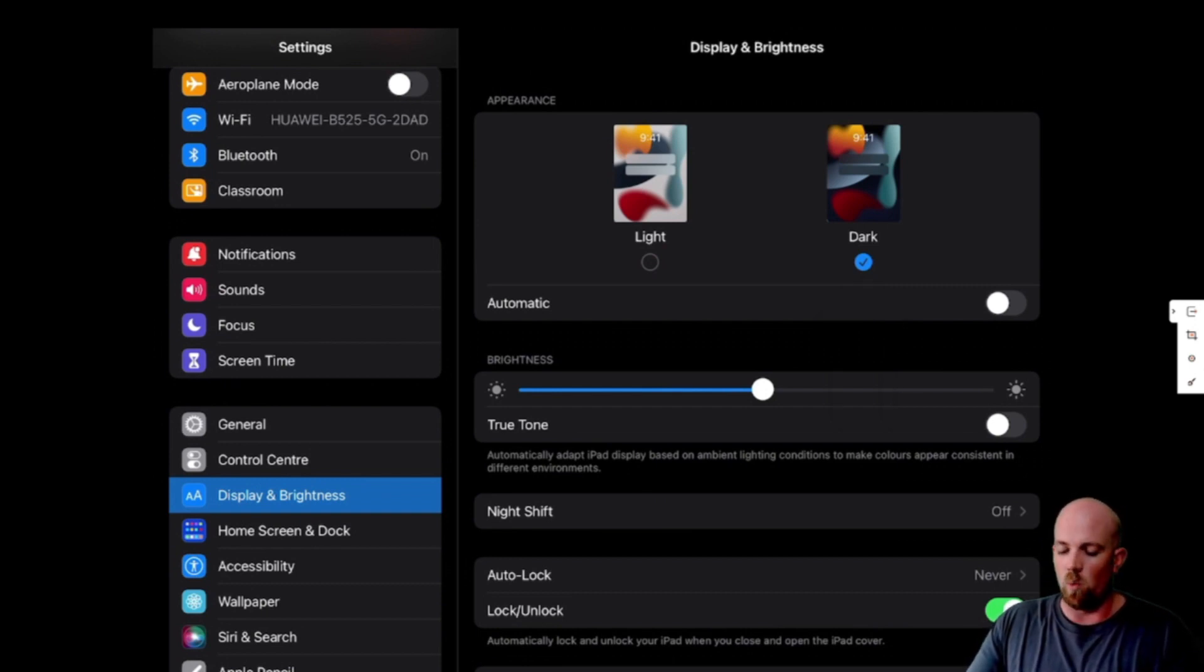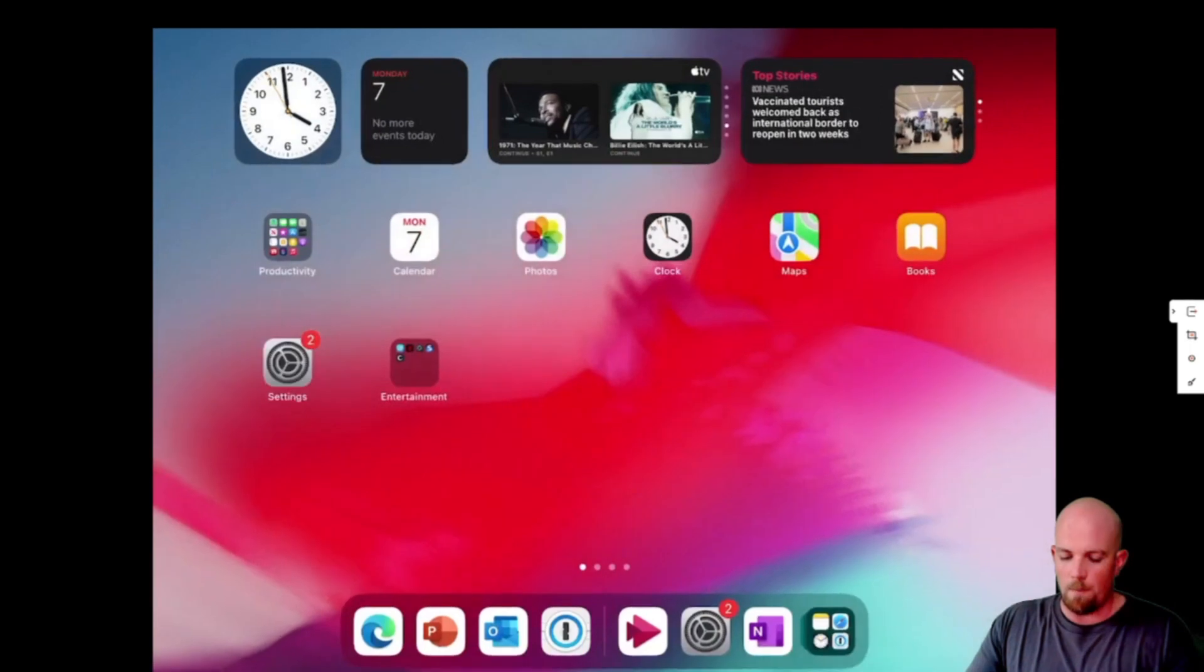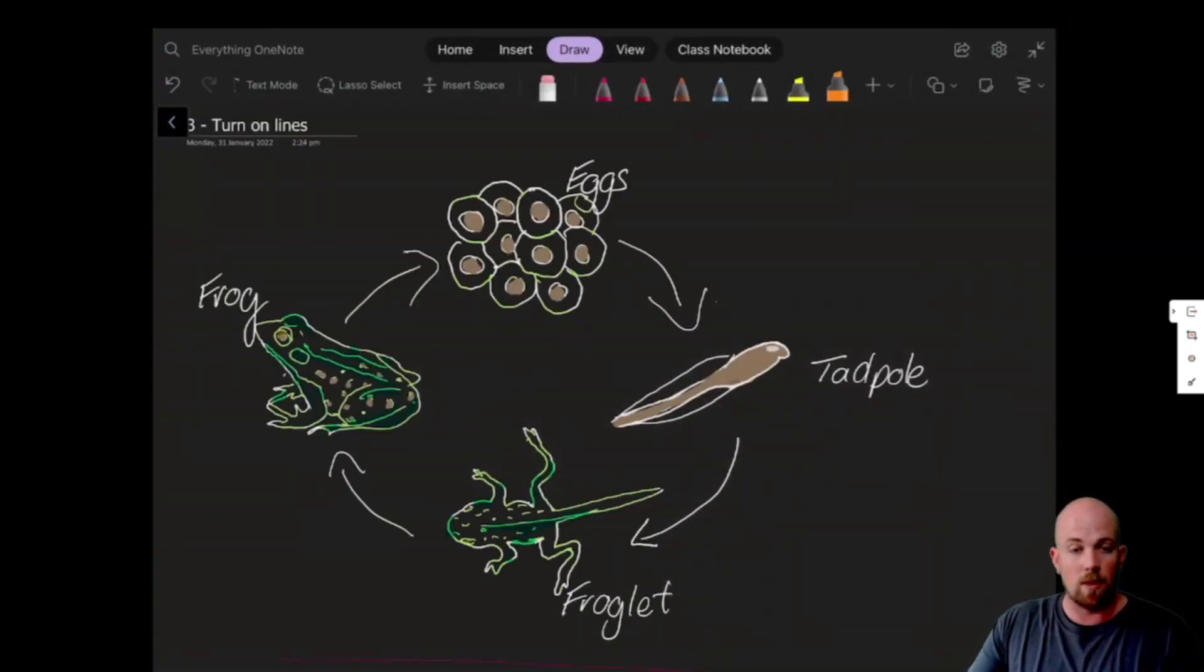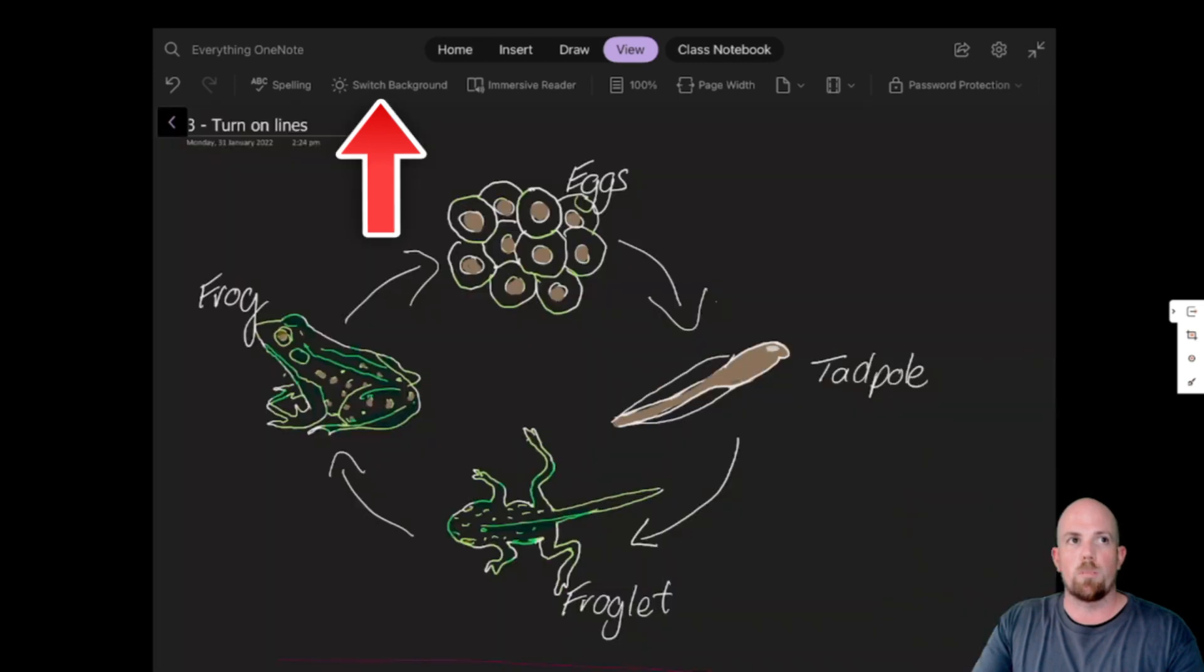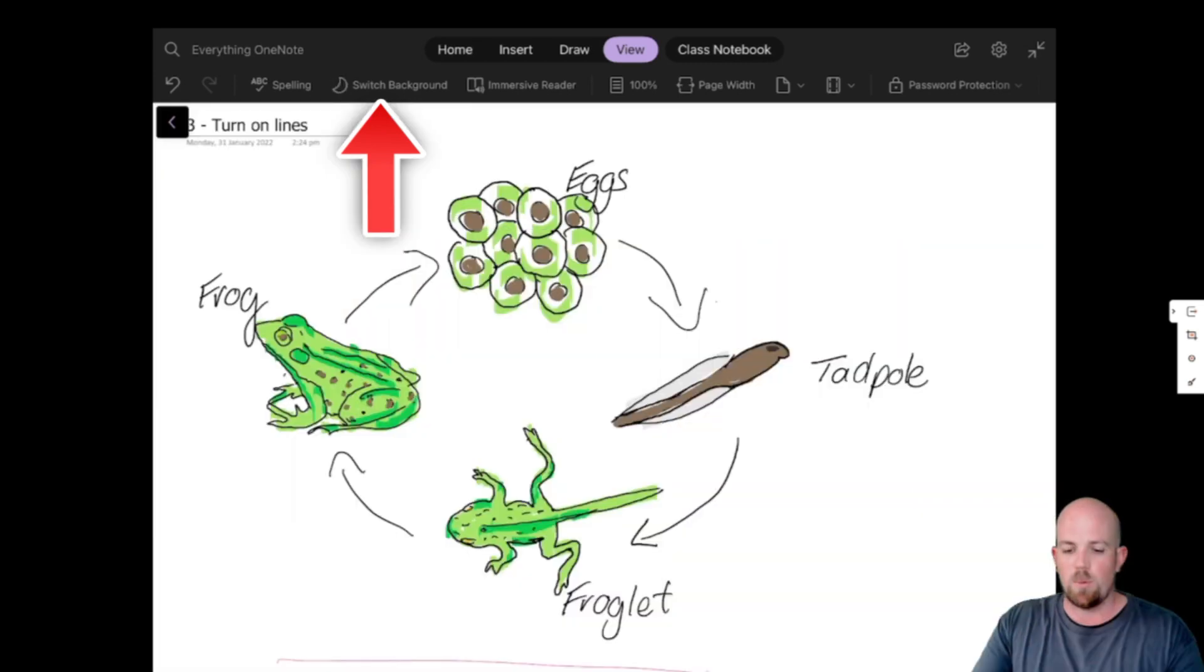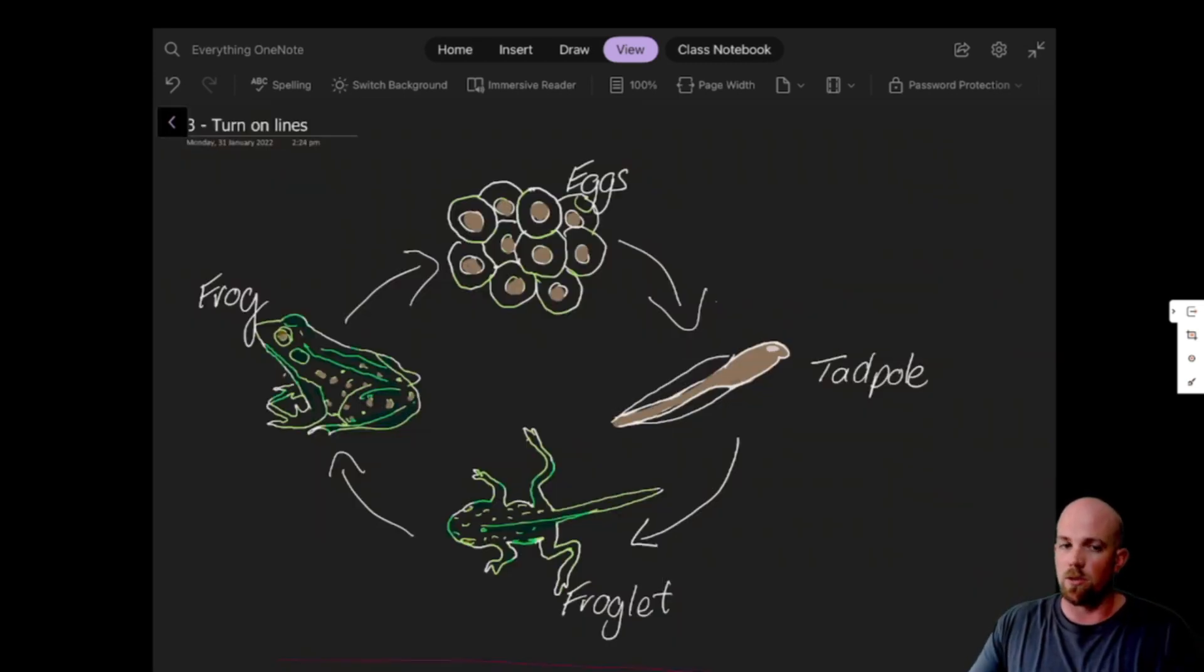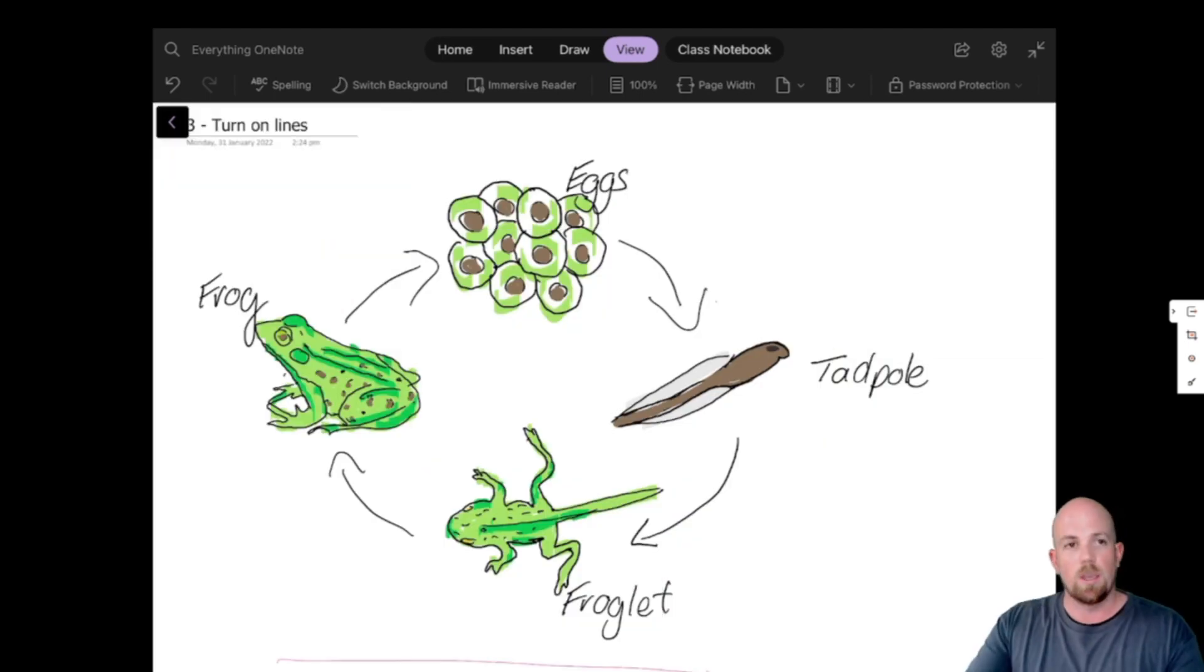So now when I come back to my OneNote, we'll notice that the background has gone dark as well. And so what will happen here is when I come over to view, this extra option here comes up - this switch background, which is in between spelling and immersive reader. And so I can, as a student, flick between the two. If this diagram suits better to a white background, I can leave it that way.